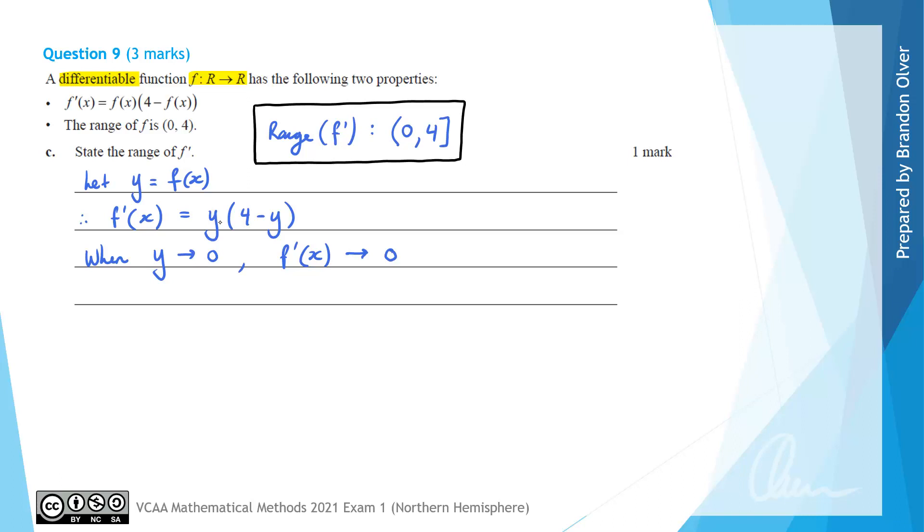So when y approaches 0, you'd almost have 0 multiplying the value of 4, which will lead to f'(x) approaching 0 but not reaching it. If we also consider when y approaches 4, so the y value is the f value, which is approaching its upper value of the range. So as y approaches 4, we also have f'(x) is approaching 0, but it doesn't quite reach it. So that's how we can be confident that the range starts at 0 not included, because it never quite gets there. But now we've got to work out why the range goes to 4 with a square bracket.